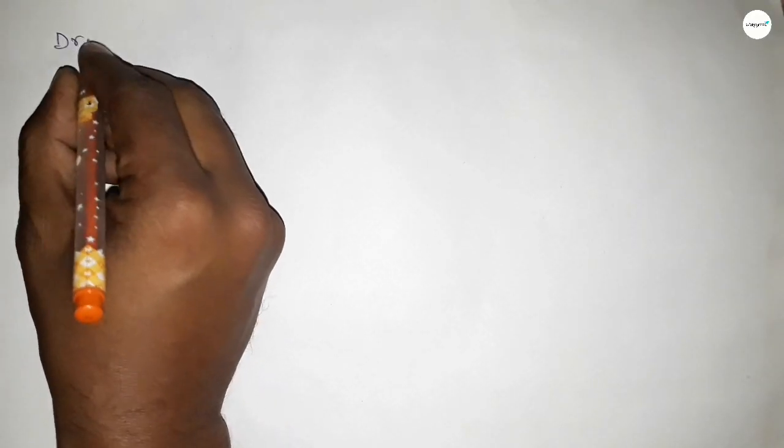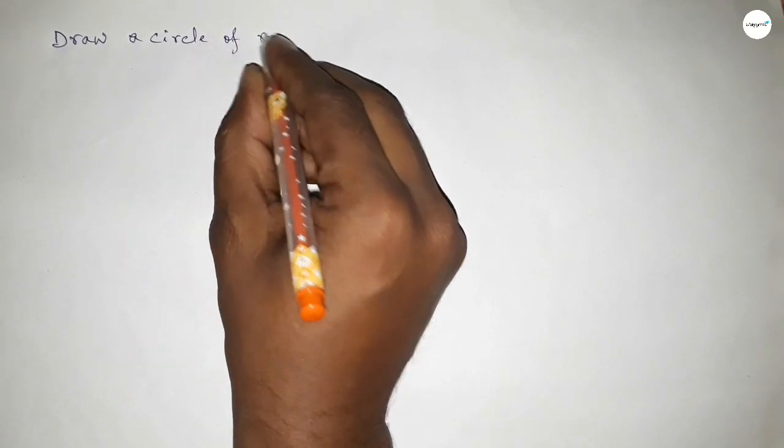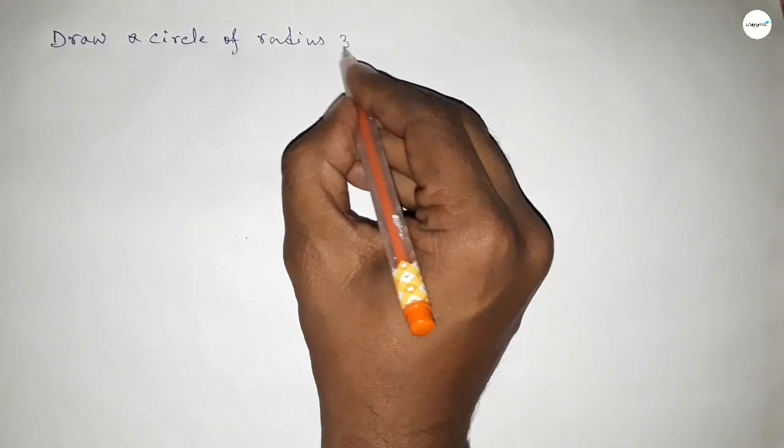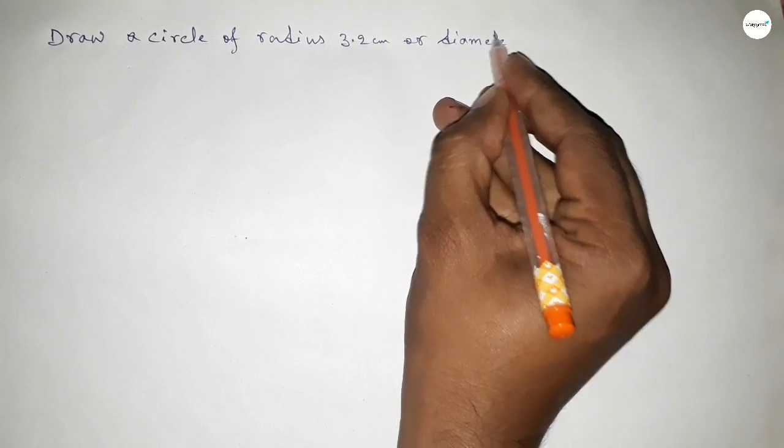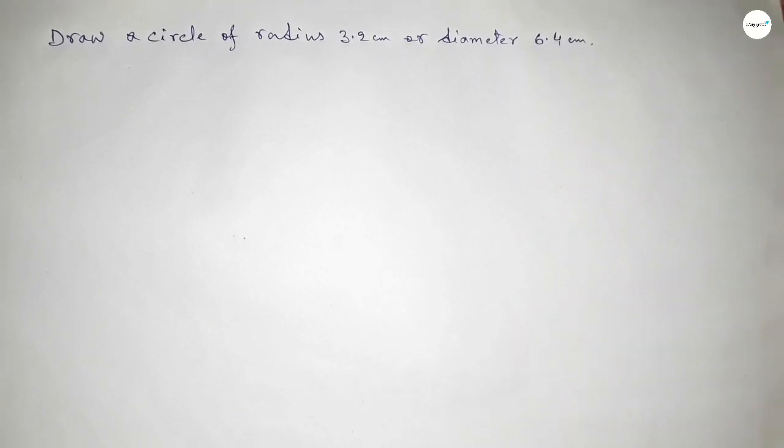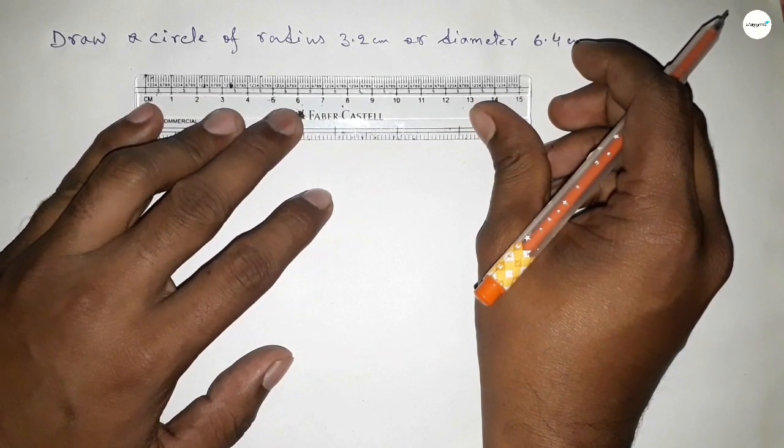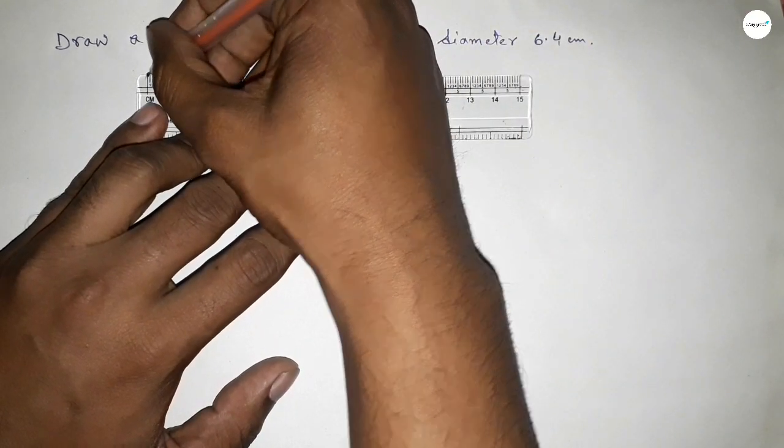Hi everyone, welcome to SI Share Classes. Today in this video we will draw a circle of radius 3.2 centimeters or diameter 6.4 centimeters. Let's start the video. First, we'll draw the radius of 3.2 centimeters.